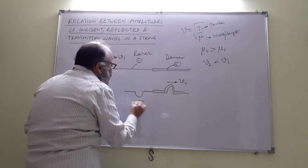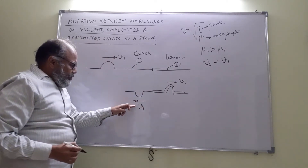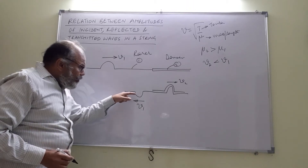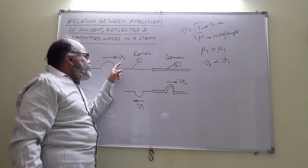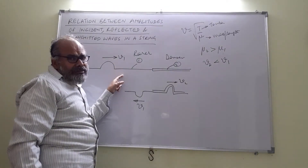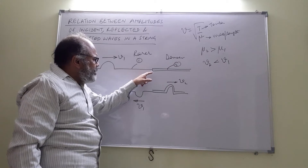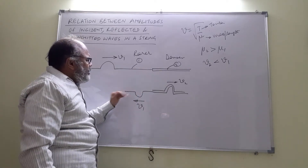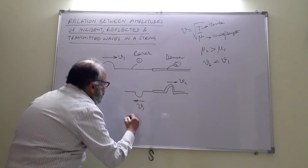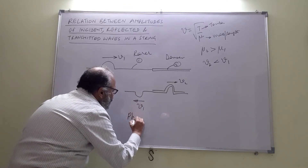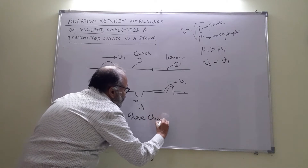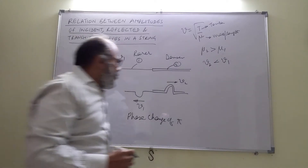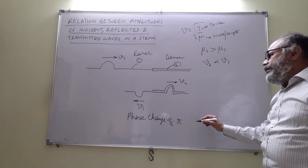The reflected wave gets inverted and travels back with the same velocity v1, because the medium is the same. This inversion takes place only if the incident pulse or wave is in a rarer medium and it encounters the boundary of a denser medium. This reversal — this inversion — we say is a phase change of π. Any inversion like this is called a phase change of π. Let us try to understand mathematically what this means.